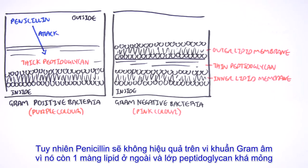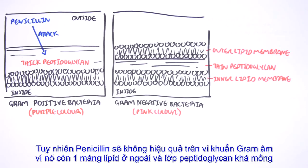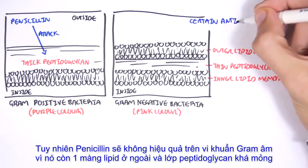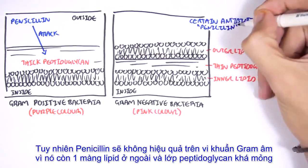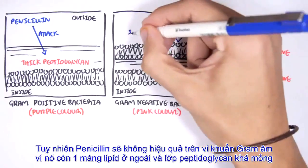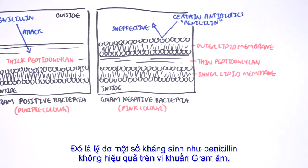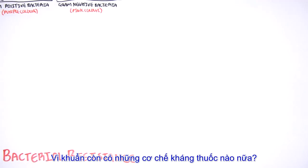However, penicillin is not very effective against gram-negative bacteria because there is an outer lipid membrane in the way, and also the peptidoglycan layer is quite thin. That's an important reason why some antibiotics, such as penicillin, are not very effective against gram-negative bacteria.